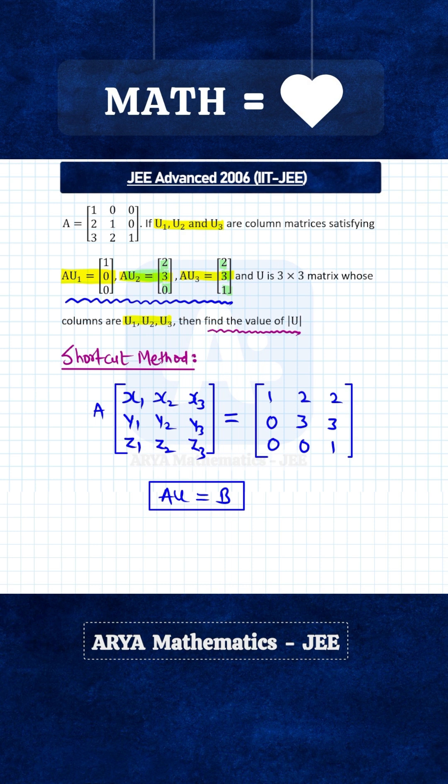So basically we can take determinant on both sides. So determinant of matrix A, this is 1, we have to find determinant of matrix u, and for matrix B again this is an upper triangular matrix, so determinant will be product of diagonal elements, so we'll get 1 into 3 into 1, that is determinant of B, this is 3.